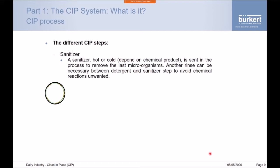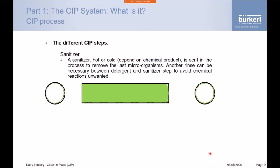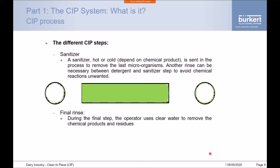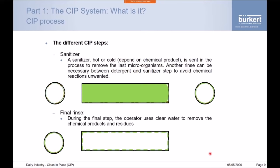Then we move on to the sanitization step, where a sanitization chemical product is sent through to remove any bio-organisms and bacteria and to make sure the pipework is completely clean and sterile. Even after this, we can still be left with a residue of sanitizer, so the final and very important step of the CIP process is to use clean water. Food and beverage companies may recover some rinse water, but the final rinse must be clear water to remove any remaining chemical residue and leave a clean pipe.